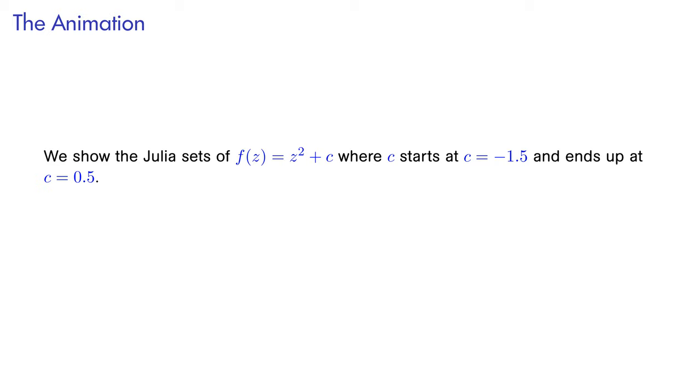We start at c equals negative 1.5, and eventually end up at c equals positive 0.5. In between, there will also be the case c equals zero, which we have just discussed. We'll see in the animation that the Julia set depends very much on the value c. That is, the Julia set changes considerably by changing the function f.